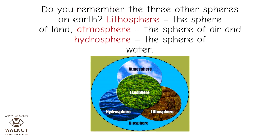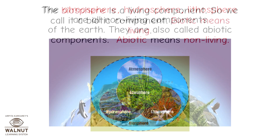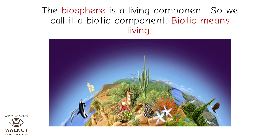Do you remember the three other spheres on earth? Lithosphere, the sphere of land. Atmosphere, the sphere of air. And hydrosphere, the sphere of water. The atmosphere, hydrosphere, and lithosphere are all non-living components of the earth. They are also called abiotic components. Abiotic means non-living. The biosphere is a living component, so we call it a biotic component. Biotic means living.